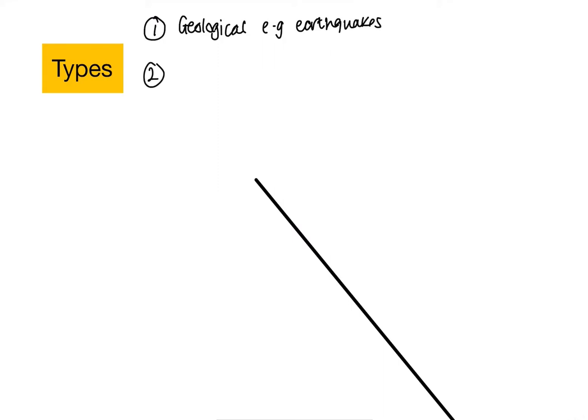Type two of your hazards would be what we call your meteorological hazards. Therefore, those are going to be things like your weather, your climates, your tropical storms.